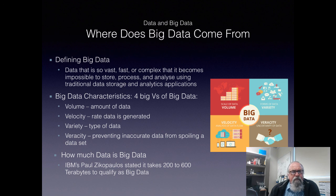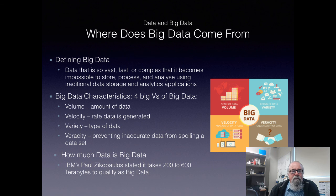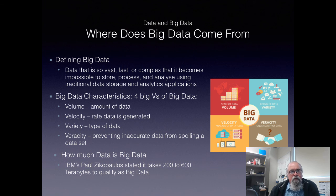To define big data: it's data so vast, fast — meaning how fast it's being created and collected — or complex that it becomes impossible to store, process, or analyze using traditional data storage and analytic applications. Big data has four characteristics, the big V's. Volume is the amount of data — it's big, that's why it's called big data. Velocity is one we often don't think of: the rate data is generated. The Sydney Harbour Bridge has 3,200 sensors each sampling at 100 samples per second, creating a massive amount of data very rapidly. So how do we log, store, and transport it?